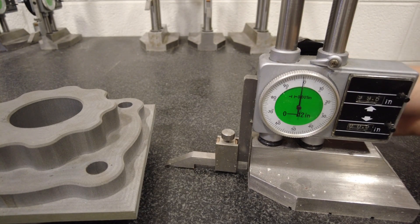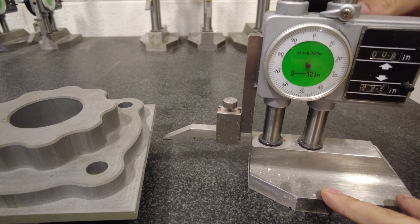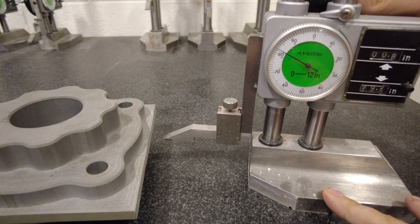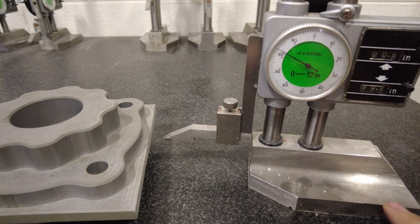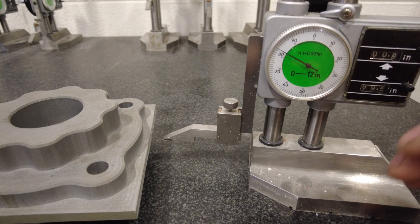Starting off with the dial height gauge, you have the base on the bottom here. There's a handle in the back to move it up and down. These range in height, so this one can measure 0 to 12 inches. We have some other models that can measure taller and shorter.